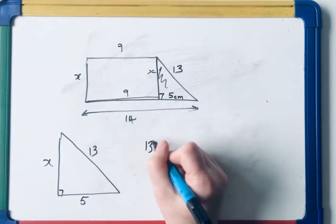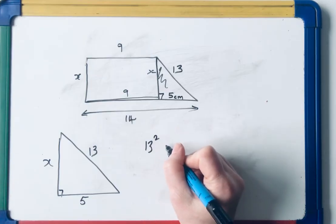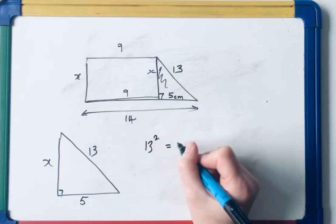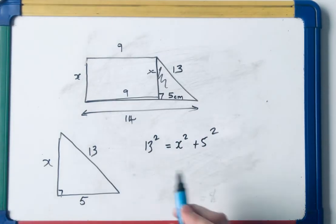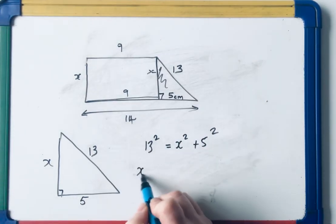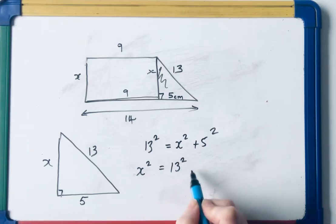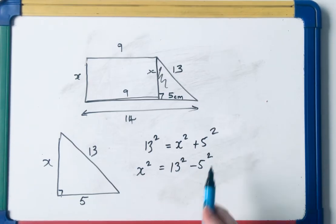So I do 13 squared. Hypotenuse equals the sum of the squares of the other two sides. Do a bit of rearranging. x squared is 13 squared, subtract 5 squared.